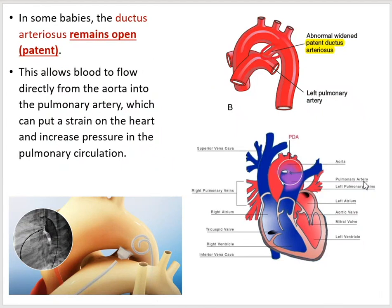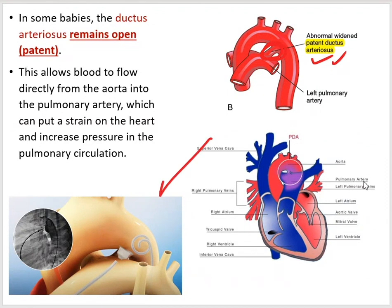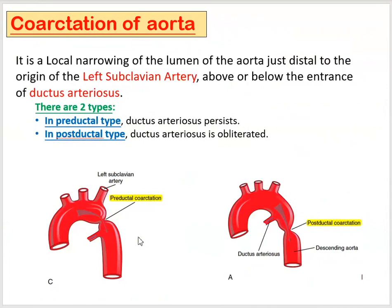In some babies with multiple congenital anomalies, the ductus arteriosus will not close and remains open — known as patent ductus arteriosus. These days, it is treated by passing a catheter and deploying a device to close the patent ductus arteriosus.